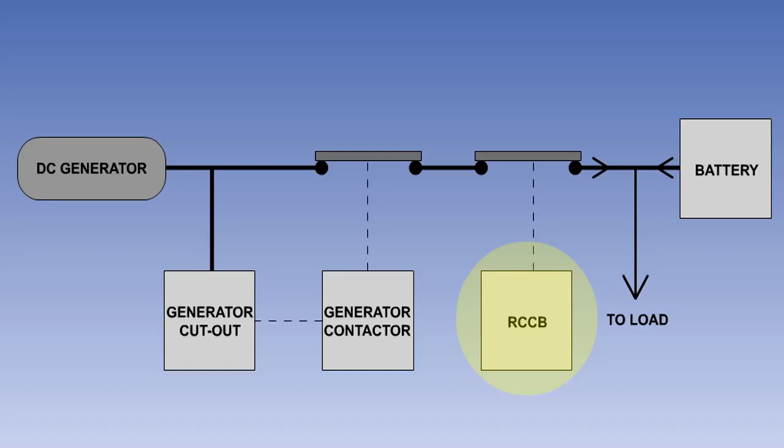Reverse current circuit breakers, or RCCBs, are fitted in direct current circuits to prevent the battery from attempting to drive the generator as a motor, if the generator contactor should fail closed, when the generator is not producing a power supply.